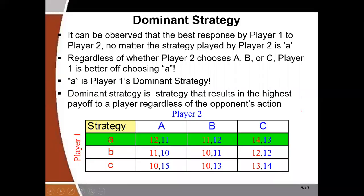This brings us to the concept of dominant strategy. From the analysis, it can be observed that for player one, no matter what player two plays, if player one plays A, he is better off. Whether player two plays A, B, or C, player one's best response is to play A. A dominant strategy is a strategy that gives you the highest payoff no matter what your opponent plays — the highest benefit regardless of what your opponent will play.